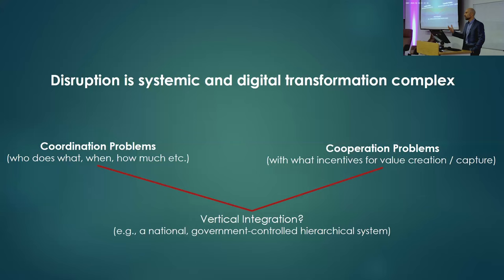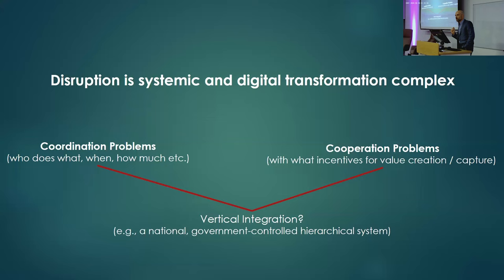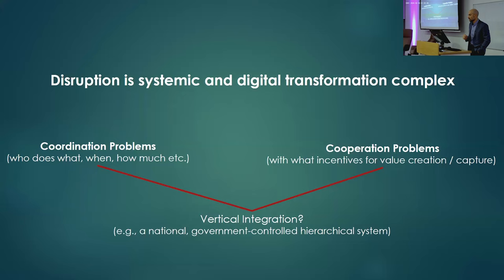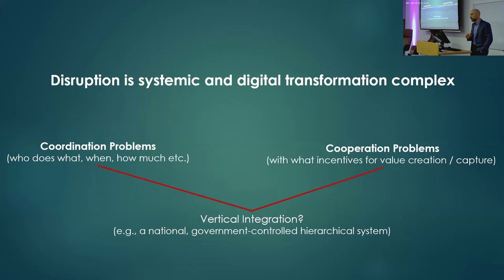But vertical integration may not work well when there are multiple heterogeneous complementary assets that are costly to contract. How do you choose between different AI workflow systems, different electronic patient records, different apps? Or when those supplying those assets have stronger bargaining power, like the big tech companies mentioned earlier? And even worse, when user needs are difficult to anticipate in advance and only emerge in the process of delivering services — in such conditions, innovation may be slowed down or even killed.